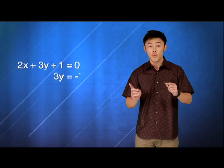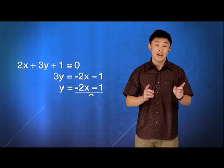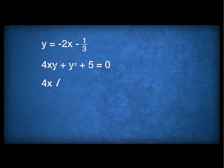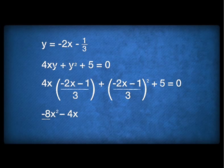Now, what if I were to use another approach? For example, from equation 1, I'll make Y the subject and I'll substitute into equation 2. Let's see what happens. From equation 1, we have Y equals to negative 2X minus 1 over 3. Let's substitute it into the second equation.